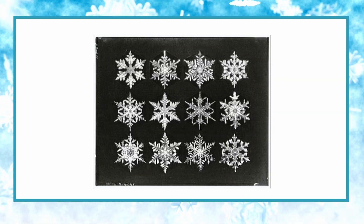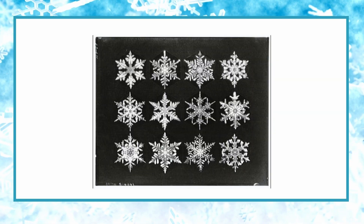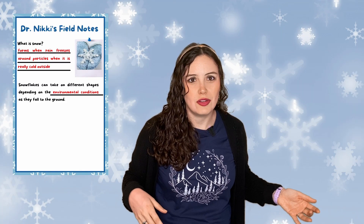But wait — that's how an individual snowflake forms. But aren't there different types of snowflakes? Now here's the thing. I always thought every snowflake was unique. Did you think that? Is it true? The truth is, it's both kind of true and kind of not true that each snowflake is unique, because it depends on what we're looking at. Snowflakes can take on different shapes depending on the environmental conditions that are taking place as they fall to the ground.